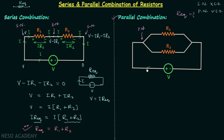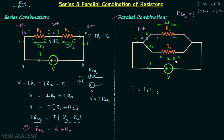Let current I be the current leaving the positive terminal of the voltage source. Current I will enter the principal node and divide into two currents I1 and I2. Applying KCL: I equals I1 plus I2. It is clear that I1 is the current through R1 and I2 is the current through R2. Therefore, the drop across R1 is I1·R1, and the drop across R2 is I2·R2.